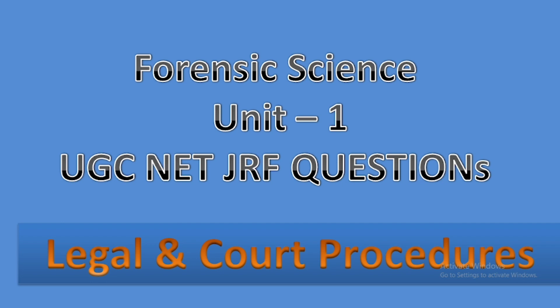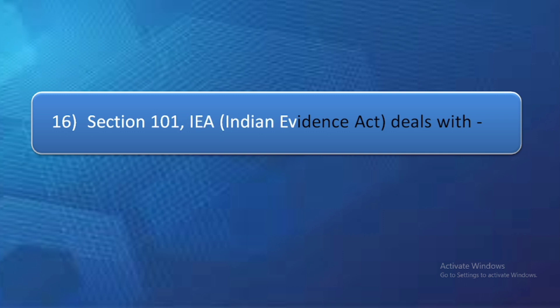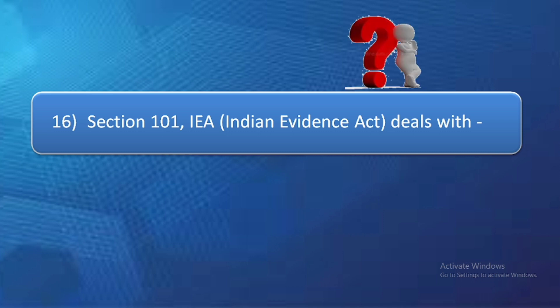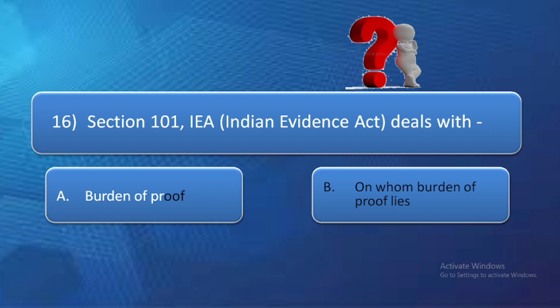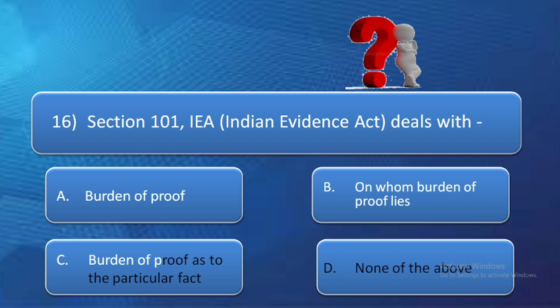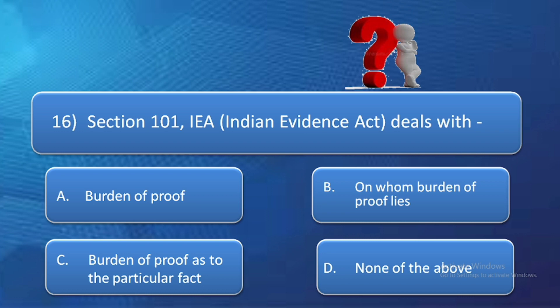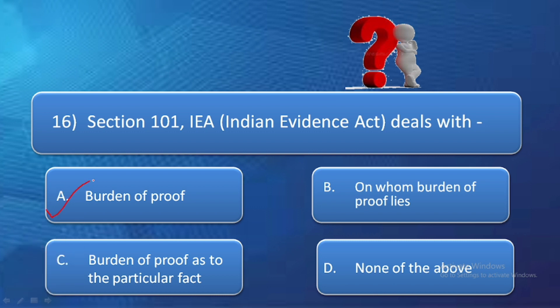The first question is: Section 101 of the Indian Evidence Act deals with — option A: burden of proof, option B: on whom burden of proof lies, option C: burden of proof as to a particular fact, and option D: none of the above. The correct answer is option A — burden of proof.